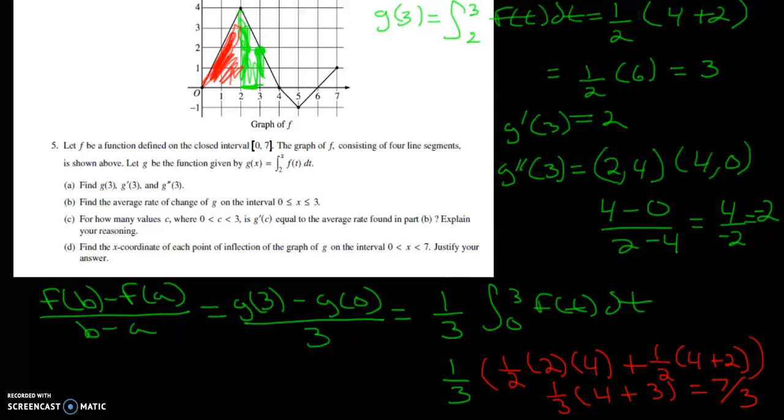Part C of this question. It says for how many values of C where 0 is between C to 3 is g prime of C equal to the average rate found in part B explained? Well 7 thirds is 2 and 1 thirds so it's right here.